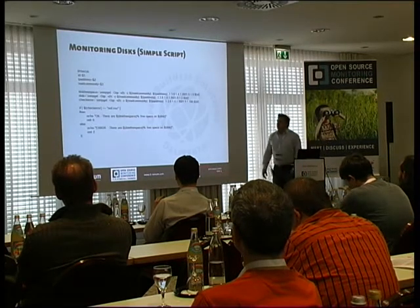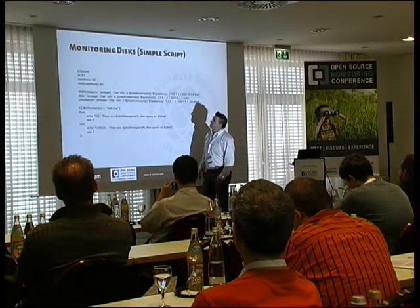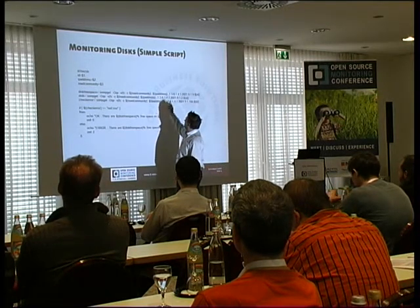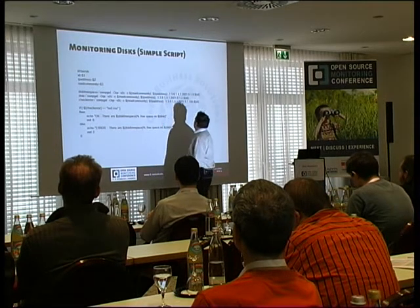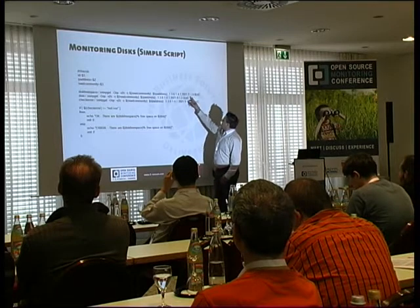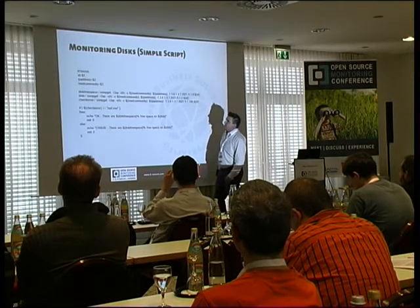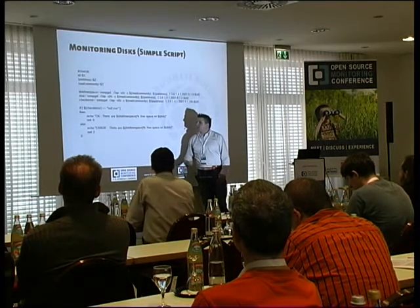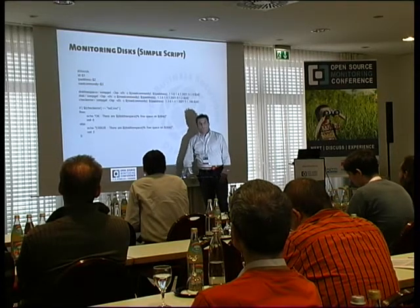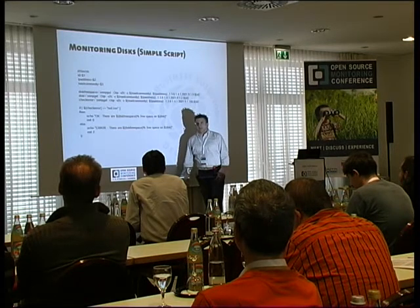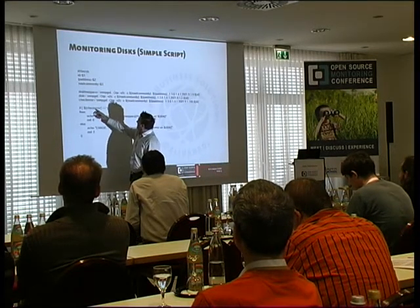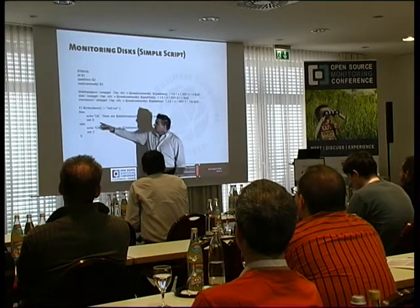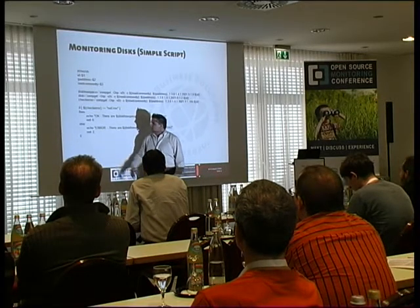This is a really simple script. You need the ID, the IP address you want to ask, and a read community. Then you gather the disk space using SNMP get — here is the base OID attached to the ID of the disk itself. Check the error: you need to check if the value is smaller than two or greater than five. You can simply say check error — if there is no error, echo OK and exit with code 0, or exit with code 2.